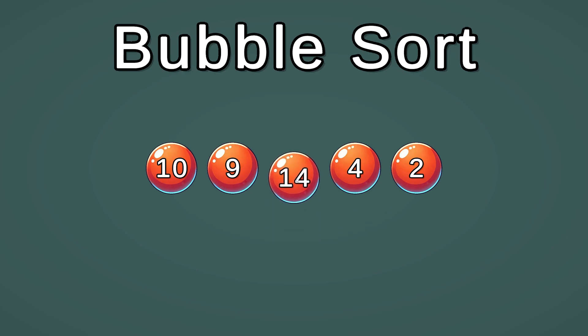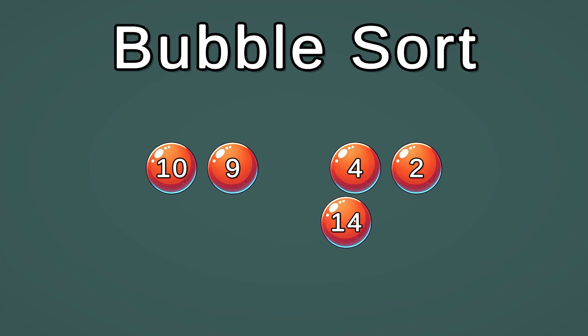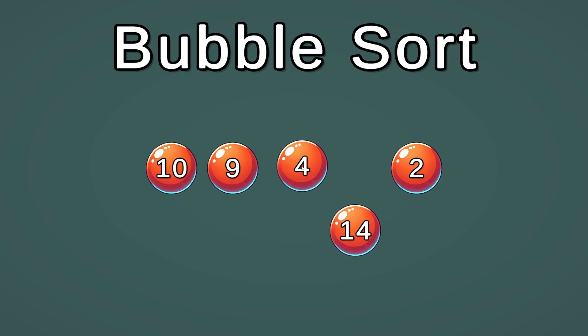Then we put 14 in the ninth place, and now 9 and 14 are in the correct order. We move to the next element, which is 4. Since 14 is greater than 4, we store 14 in a temporary location.